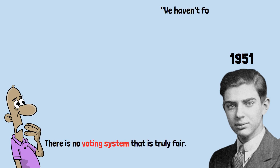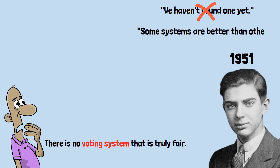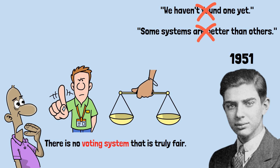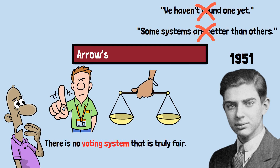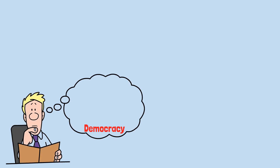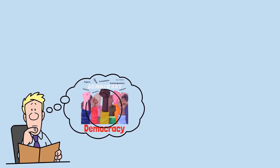There is no voting system that is truly fair — not that we haven't found one yet, not that some systems are better than others. No voting system can satisfy the basic fairness criteria that you'd think any reasonable system should meet. This is Arrow's impossibility theorem, and it proves that democracy, the way we think it works, the way we assume it should work, is mathematically impossible.